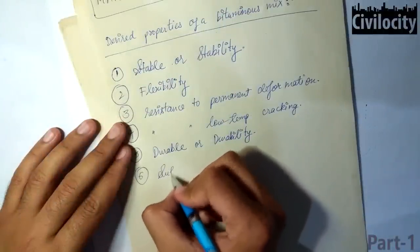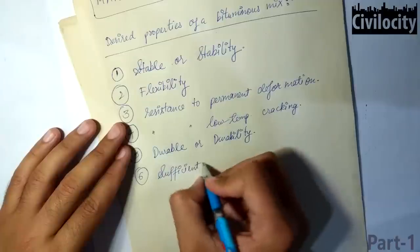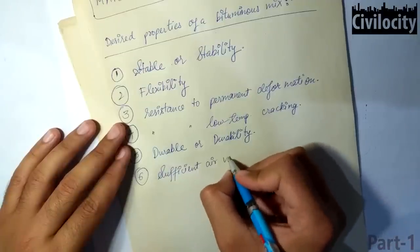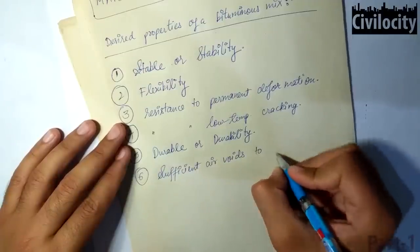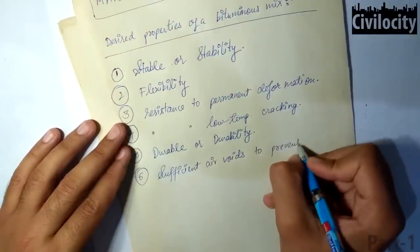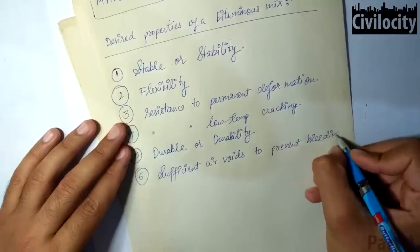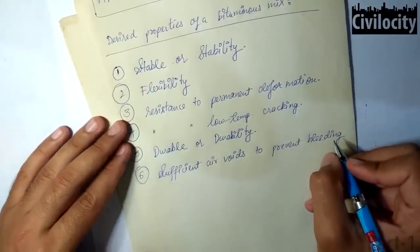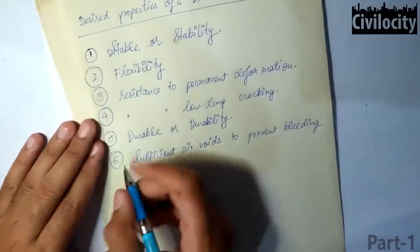It should possess enough air voids to prevent bleeding. If there is more content of bituminous binder and very less content of air voids, then it will result in bleeding. Bleeding means that your binder will flow out of the aggregates and then will be stripped off with the wheel load.